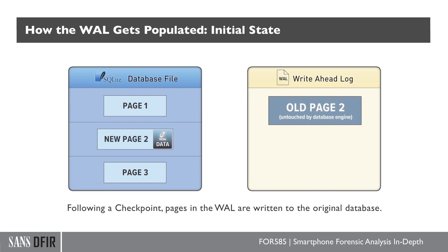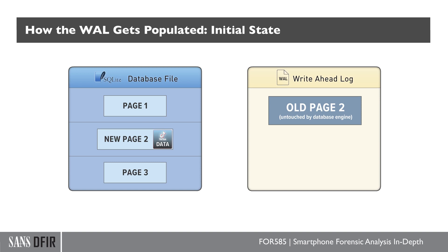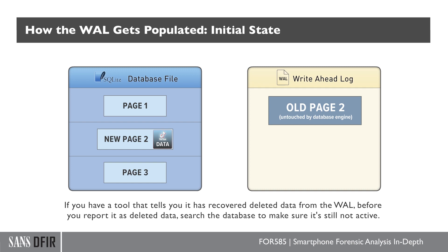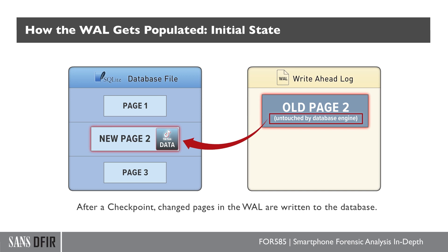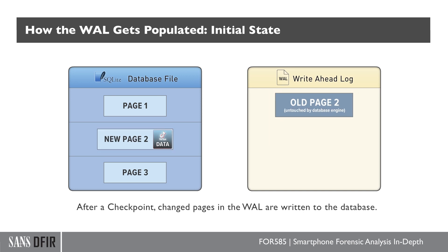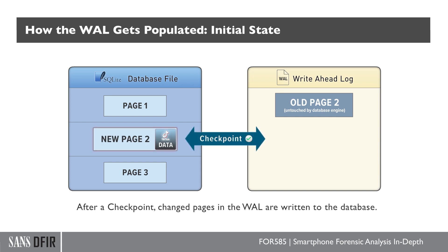This is where some tools will do strange things, and this is something you have to consider. If you have a tool that tells you it has recovered deleted data from the WAL, before you report that as deleted data, search the database and make sure it's still not active. Technically, old page two is no longer in use — it's marked as deleted, but it's not deleted. It simply moved its way over to the database. I've tried to work with the vendors to correct them on calling data removed from the WAL 'deleted,' because it's just not there — what happened was a checkpoint occurred and it went into the database.